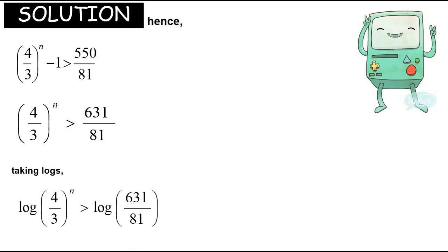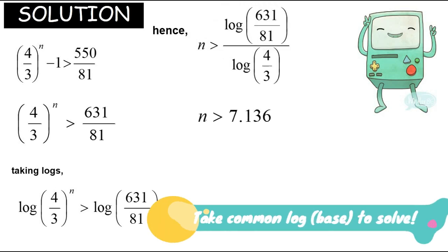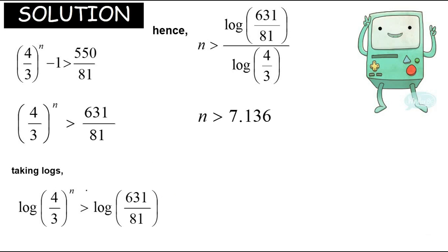So therefore you have 631 over 81, and then take log - basically the common log would do. This one can be brought in front because it's a power rule. Now we have to check first: log 4 over 3, is it positive or negative? If it is negative, the sign must be changing, but this one is a positive number.